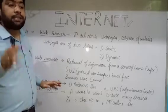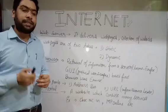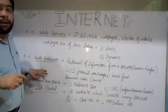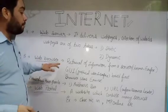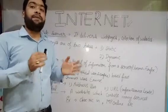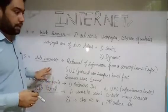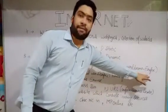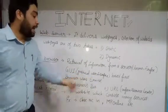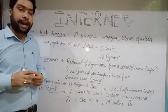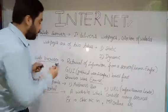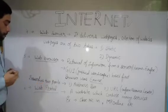Point five: web browser. The main device we use to access the internet is the web browser. A web browser is used for retrieval of information from a server — meaning it helps us access the data that a website consists of. Examples include Google Chrome, Mozilla Firefox, and others. The first GUI-based internet web browser was called Erwise, which used a Graphical User Interface.